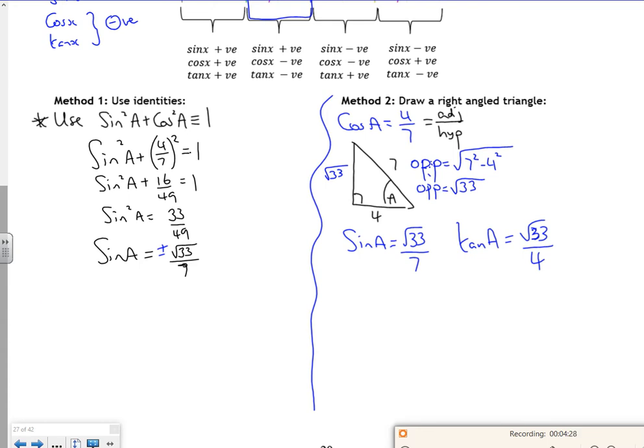I need to remember: if A is acute, therefore sine of A is positive. So my sine A is positive square root of 33 over 7.